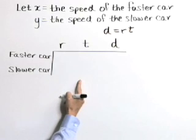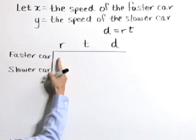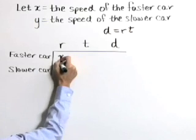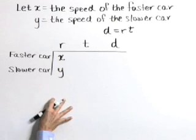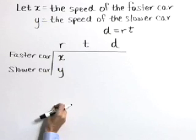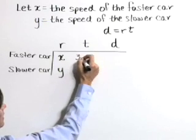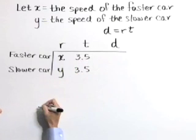Now let's complete this table. First of all, we've defined the faster car's speed as x and the slower car's speed as y. We're told that after a period of 3.5 hours, these cars meet. So the time amount is 3.5 for both cars.